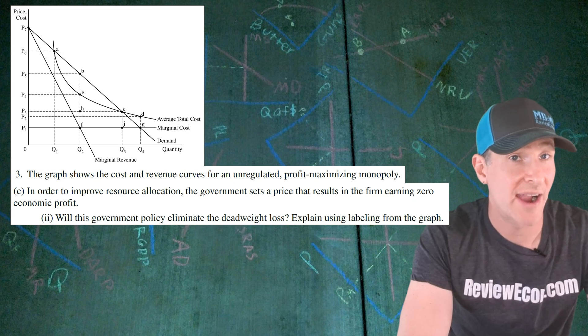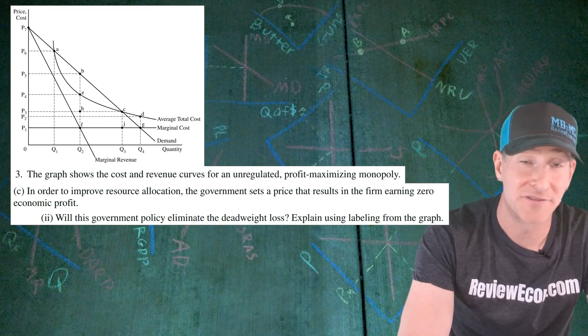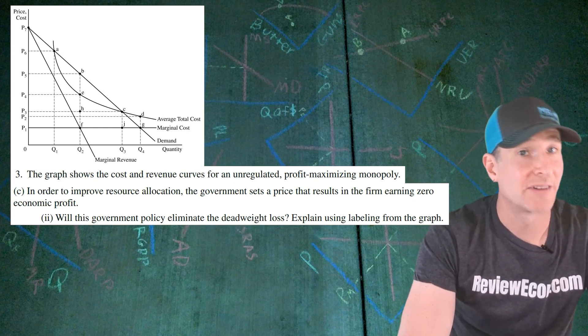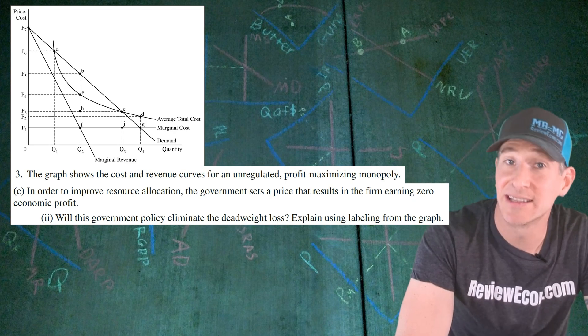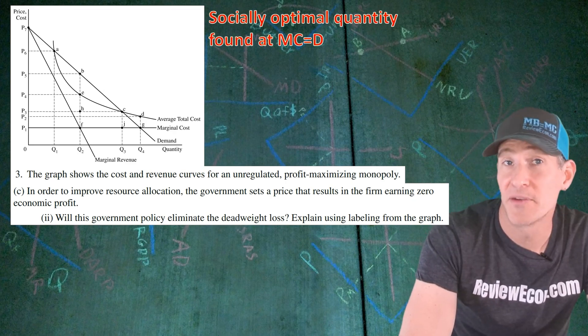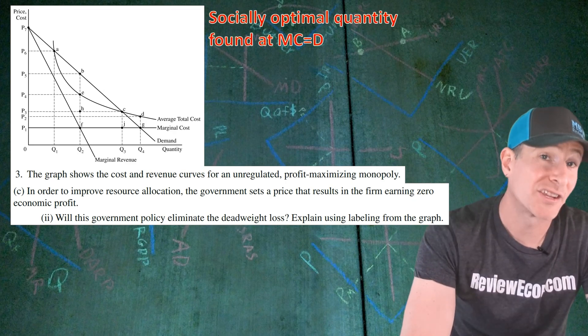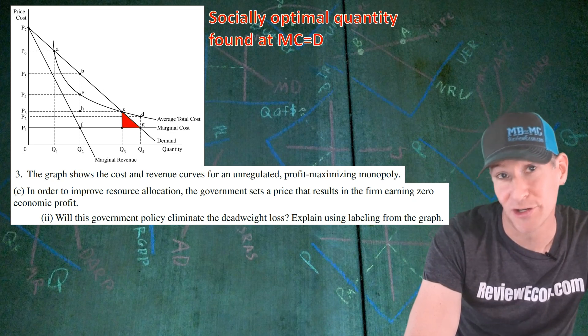For CII, we are asked if this policy will eliminate deadweight loss and we have to explain using labels from the graph. Now remember, deadweight loss would actually be eliminated at point G where the marginal cost equals the demand. At Q3 we still have this triangle of deadweight loss.